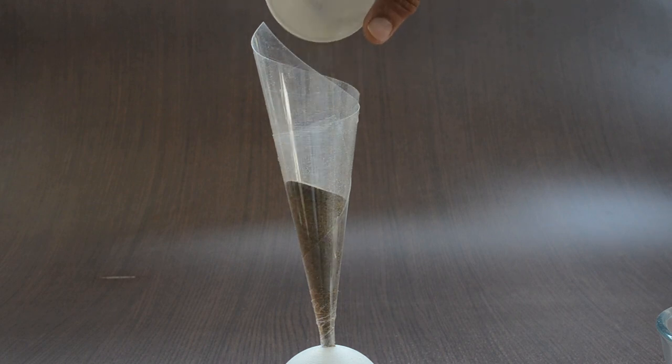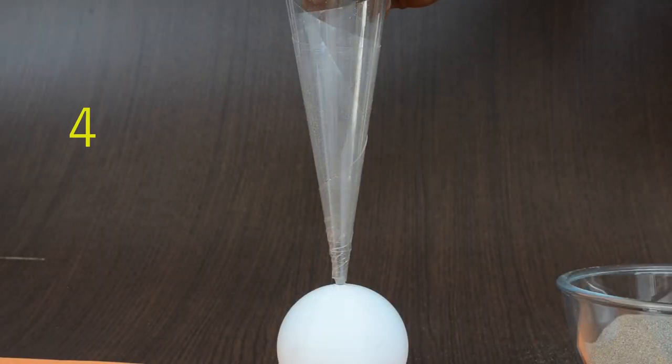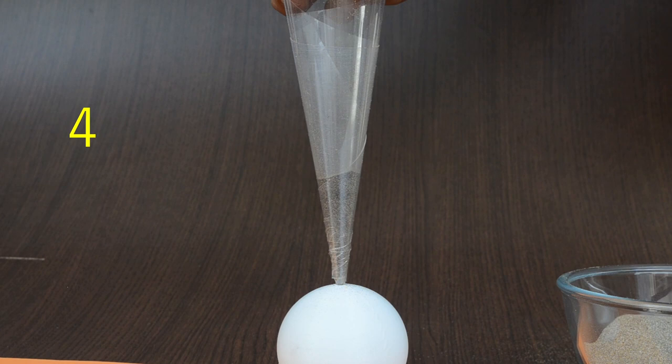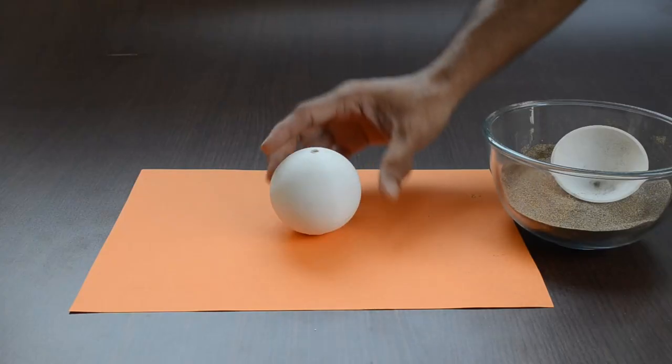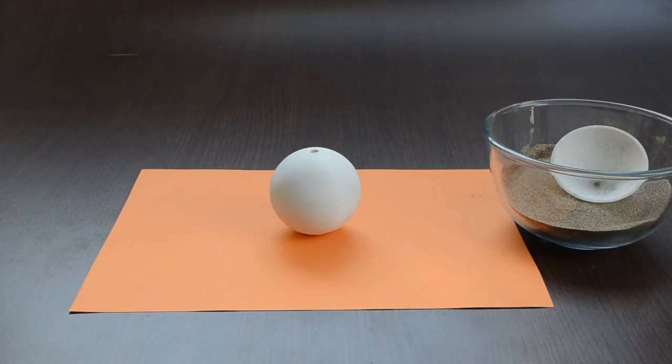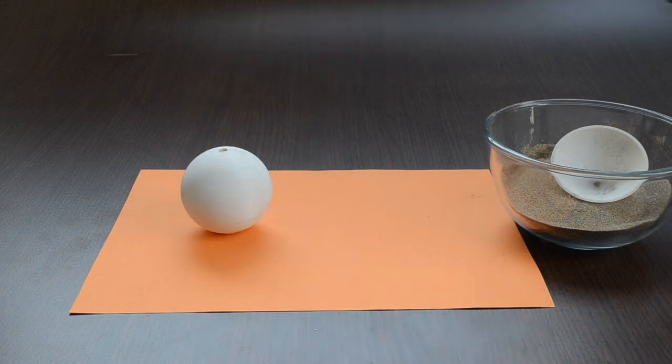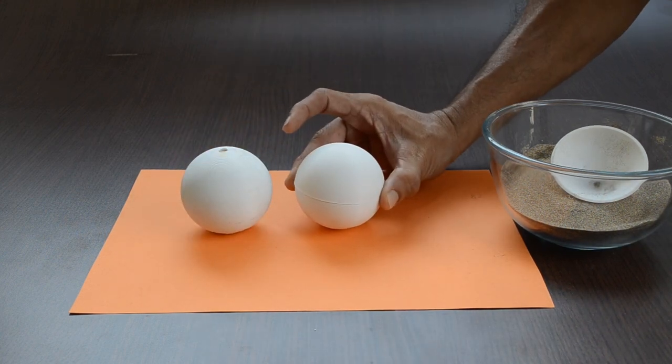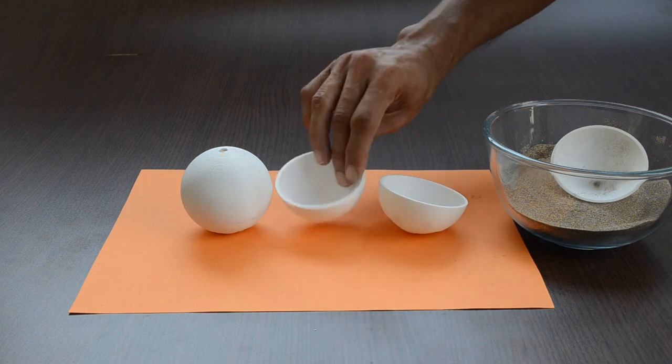It turns out that we need four conefuls of sand to fill the sphere completely. It's hard to see inside this sphere, so we can repeat the same activity with these two hemispheres which are cut from this one big sphere.